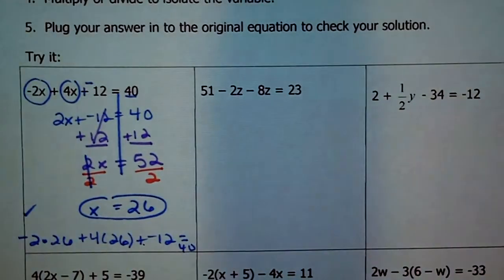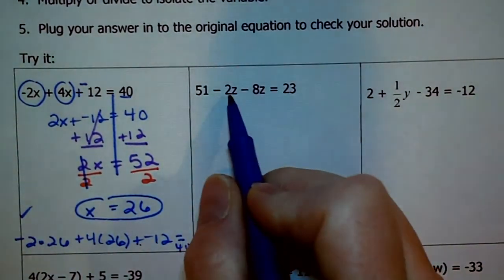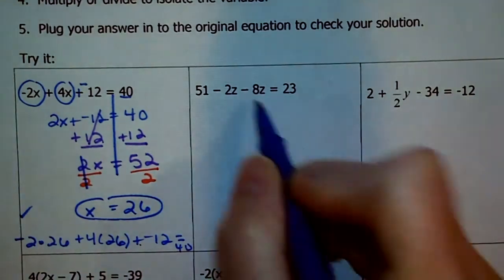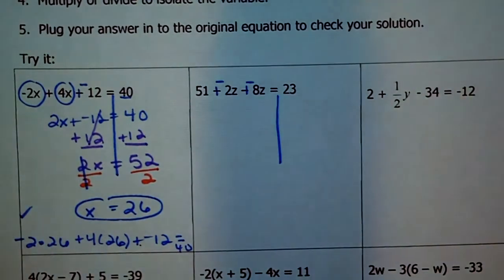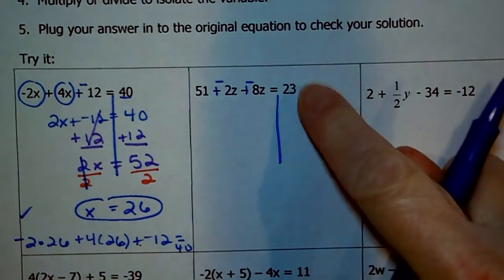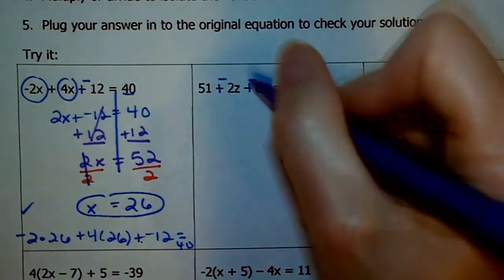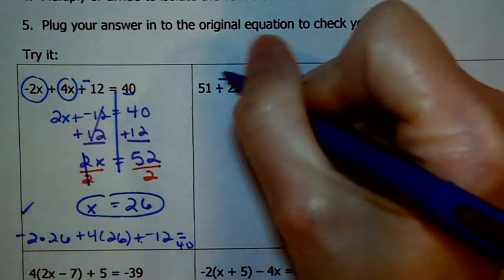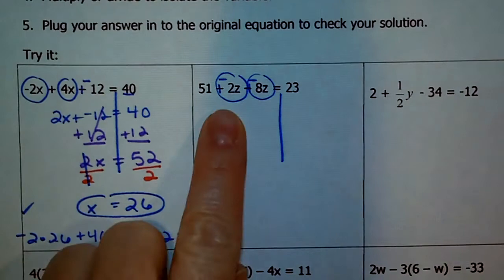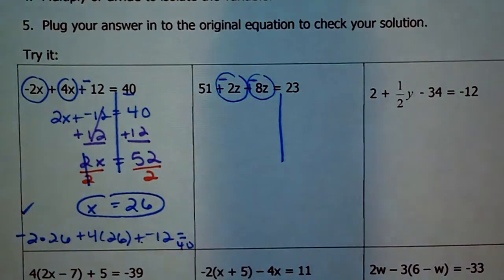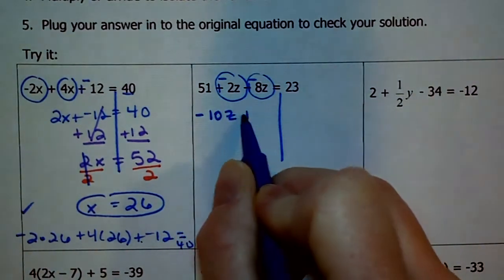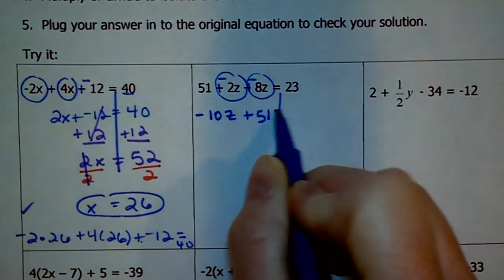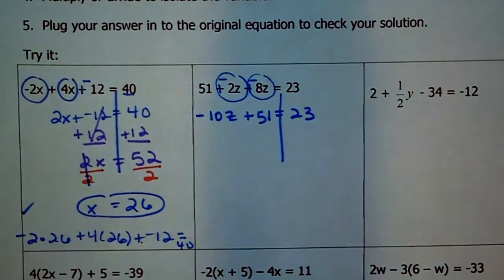All right, moving on to the next example here. I have 51 - 2z - 8z = 23. I am going to keep change change. Always. And then, I see over here I just have a 23. There's nothing I can do. But, over here I do have some like terms. Remember, these are negative now. So, when you take -2z + -8z, when you add two negatives, add normally, keep the sign. I'm going to put a little slash through my z so it doesn't look like a 2. So, I have -10z + 51 = 23.